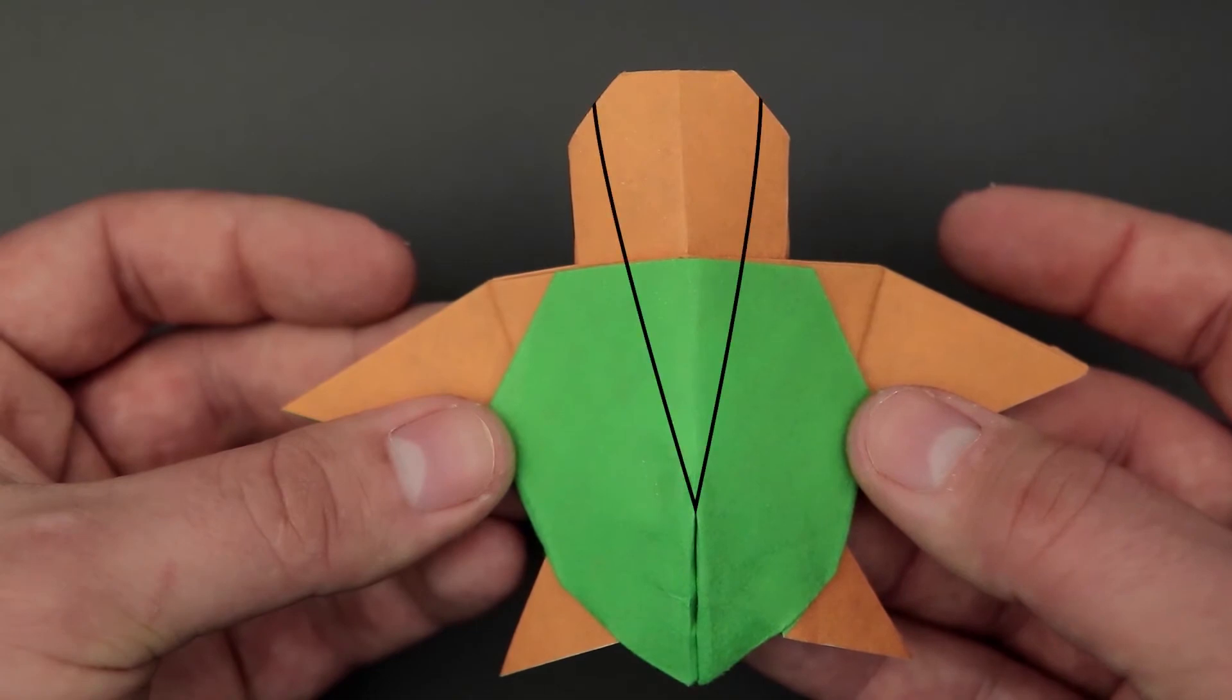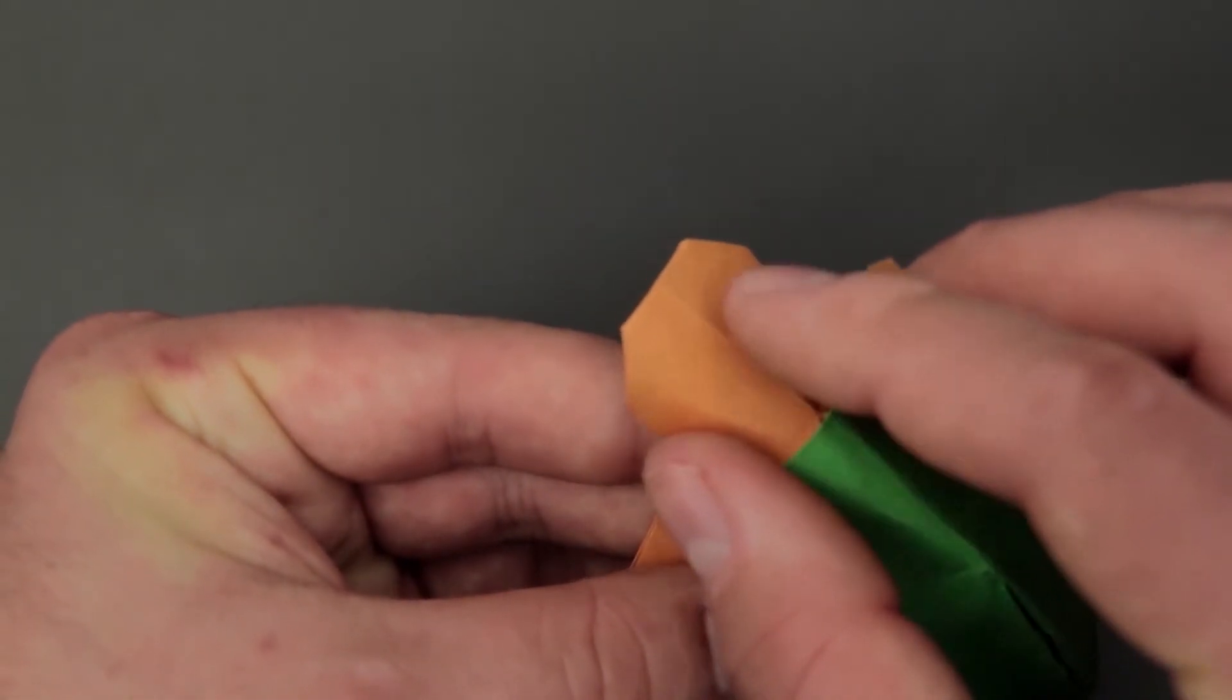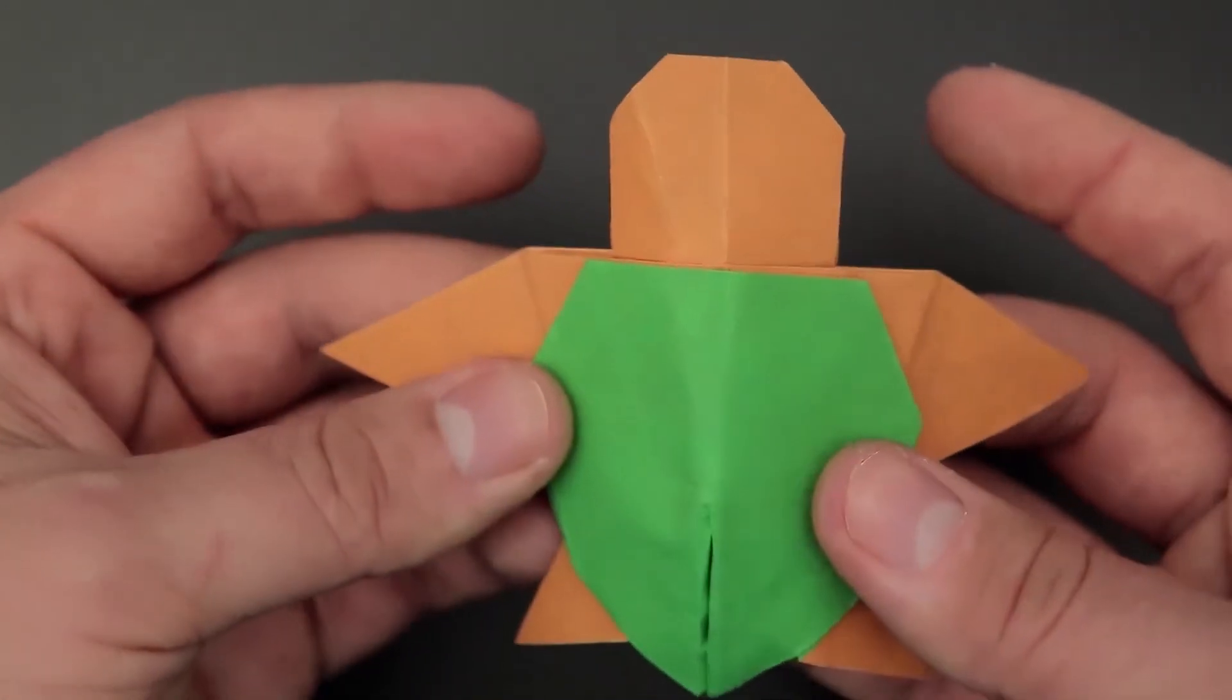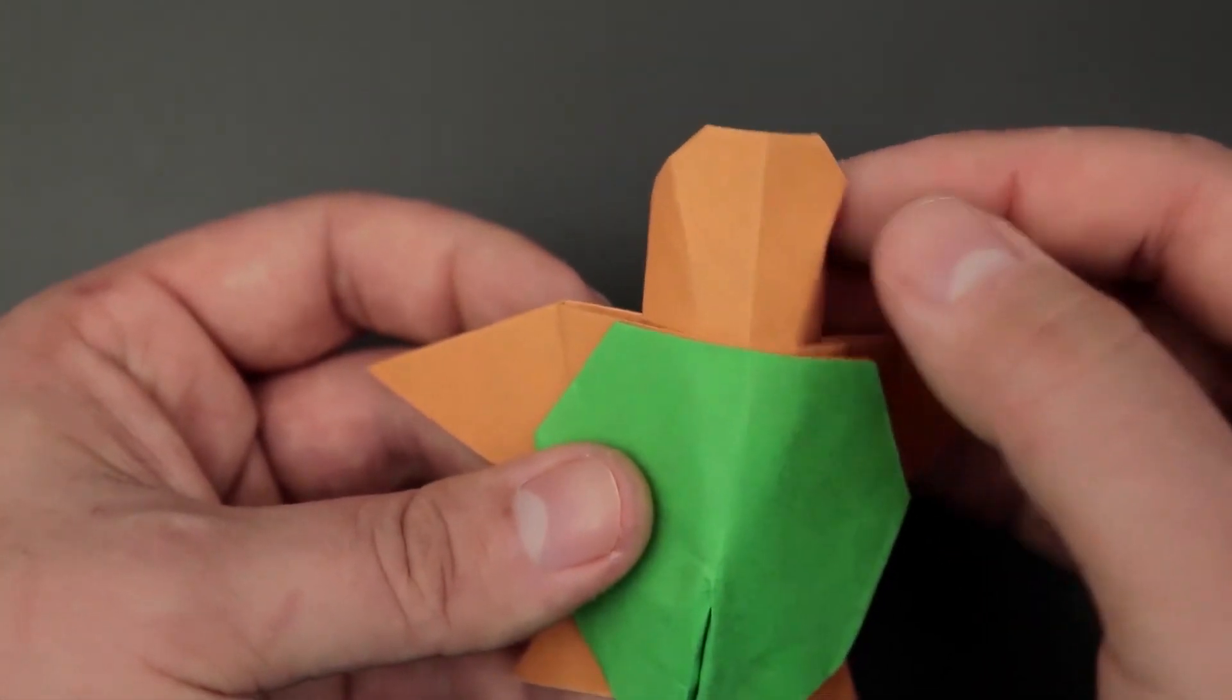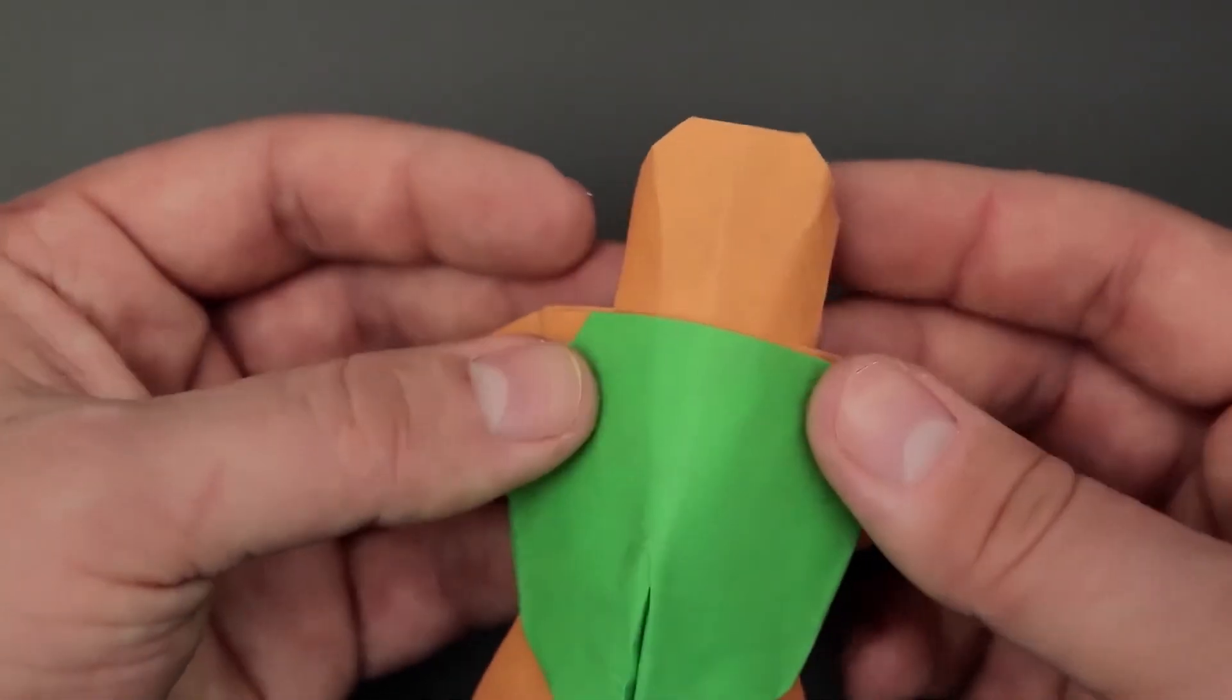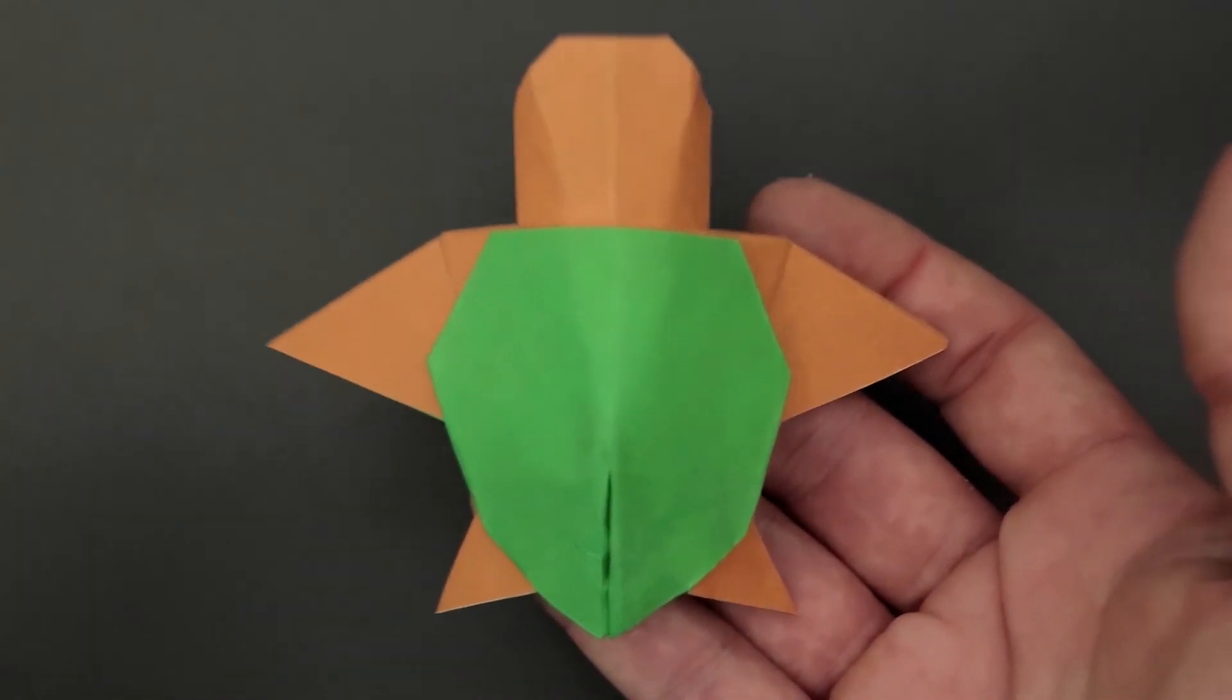And lightly mark these two lines here, creating a more realistic result. With that, our origami turtle is ready.